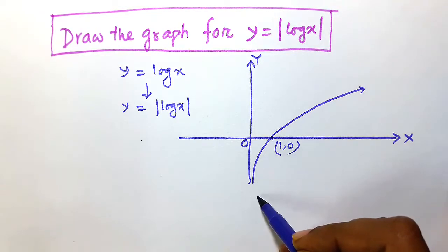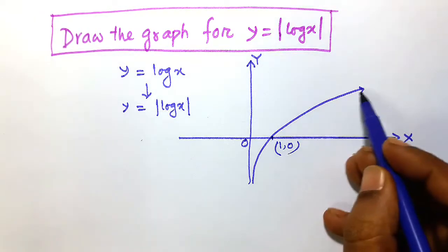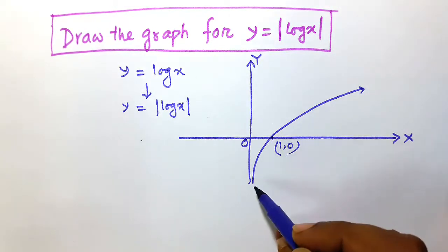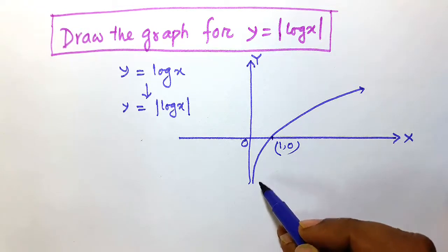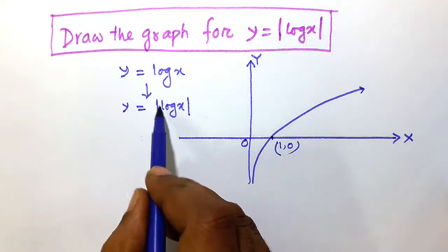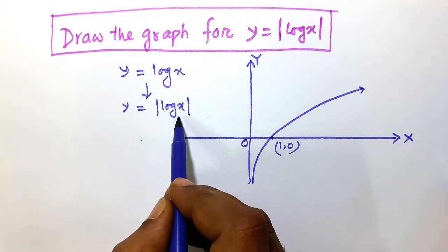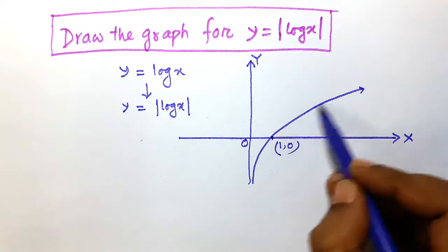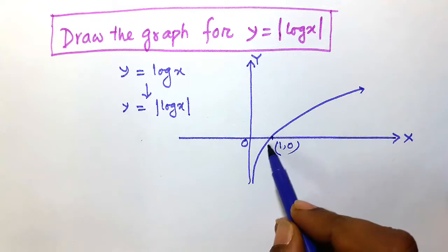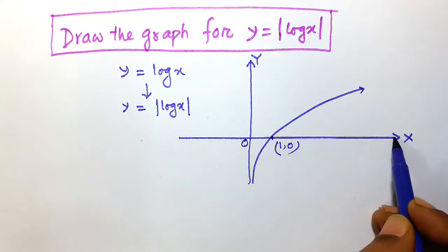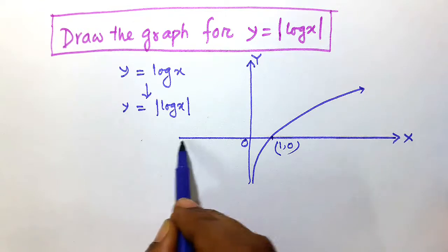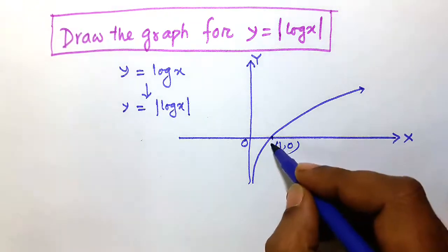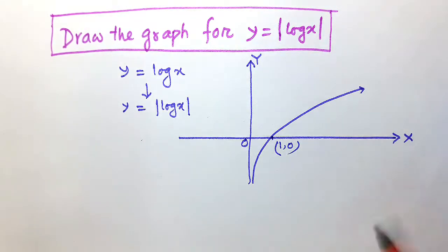From this curve you can see that some parts are positive and some are negative. Above the x-axis is the positive part of log x, and below is the negative part. To draw y is equal to modulus of log x, first leave the positive part of y is equal to log x as it is. The image of the negative part will be drawn with respect to the x-axis as a mirror.